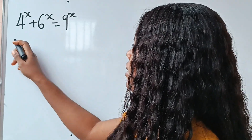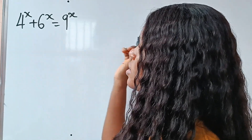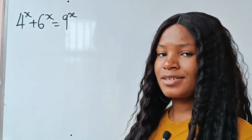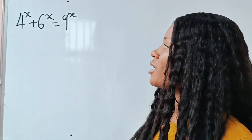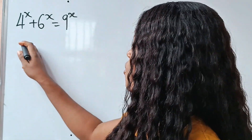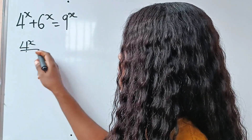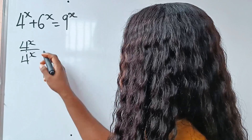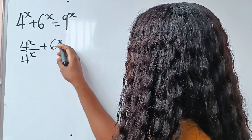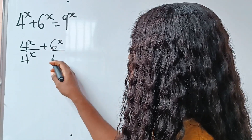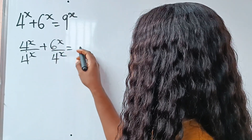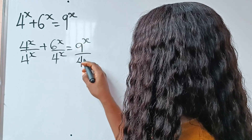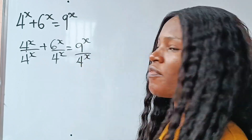I looked at this and I decided to divide by 4 to the power of x. And something magical happened. So, 4 to the power of x divided by 4 to the power of x, plus 6 to the power of x divided by 4 to the power of x, is equal to 9 to the power of x divided by 4 to the power of x.